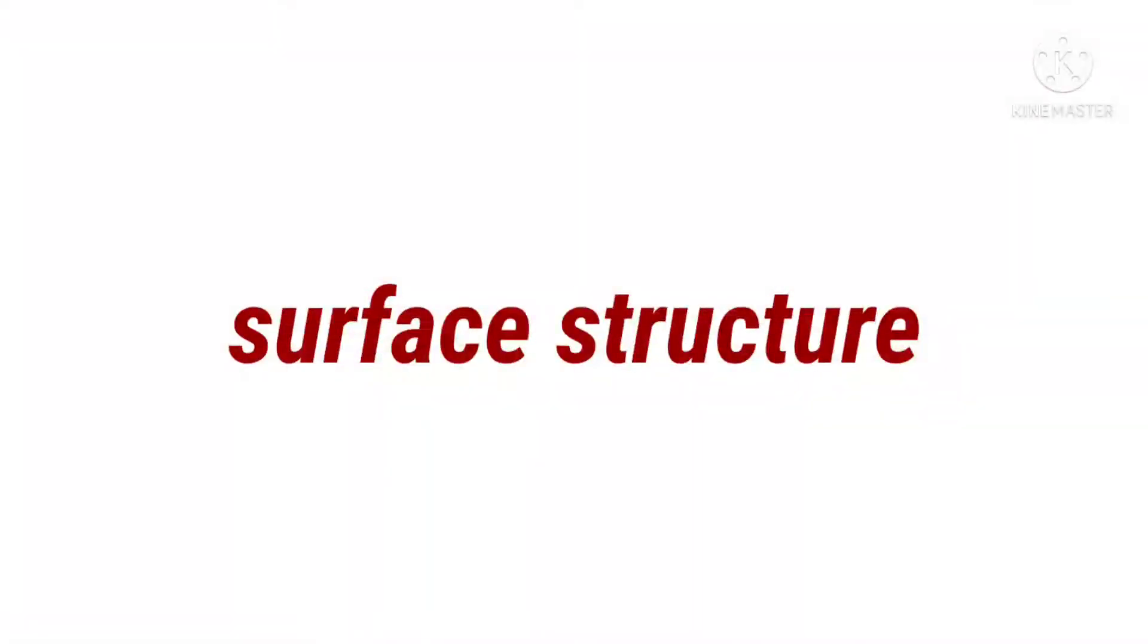Next is surface structure. The other important category of structures is known as surface structures. This includes those structures which can be idealized to a structure. Slabs, shells, and folded plates are examples of surface structures.